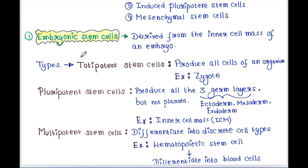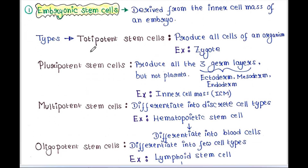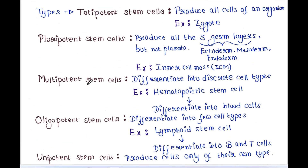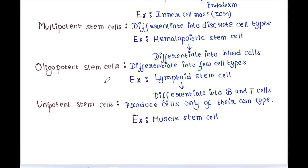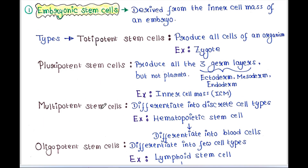There are different types of embryonic stem cells: totipotent stem cells, pluripotent stem cells, multipotent stem cells, oligopotent stem cells, and unipotent stem cells. First, totipotent stem cells — these can produce all cells of an organism. It is the zygote that can form all cells of an organism as well as the placenta.